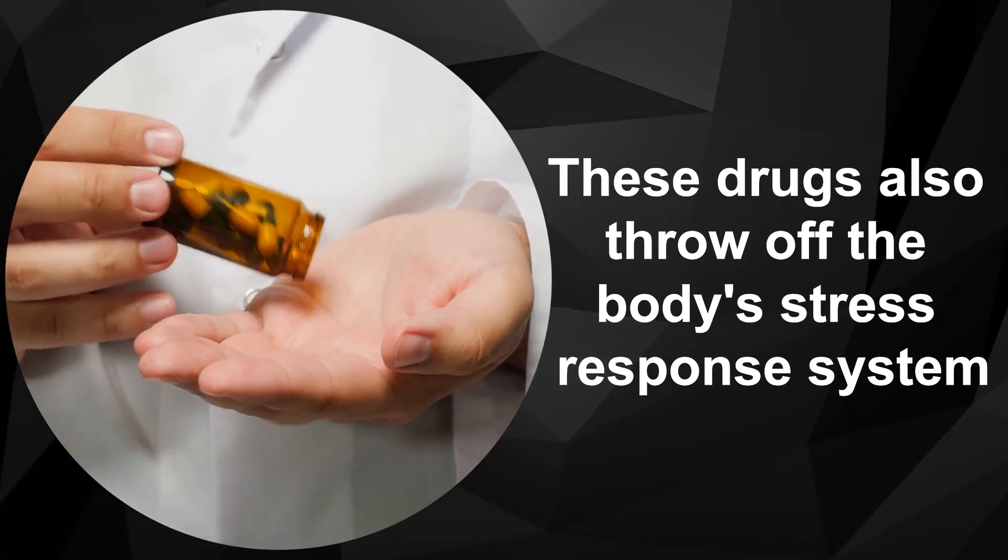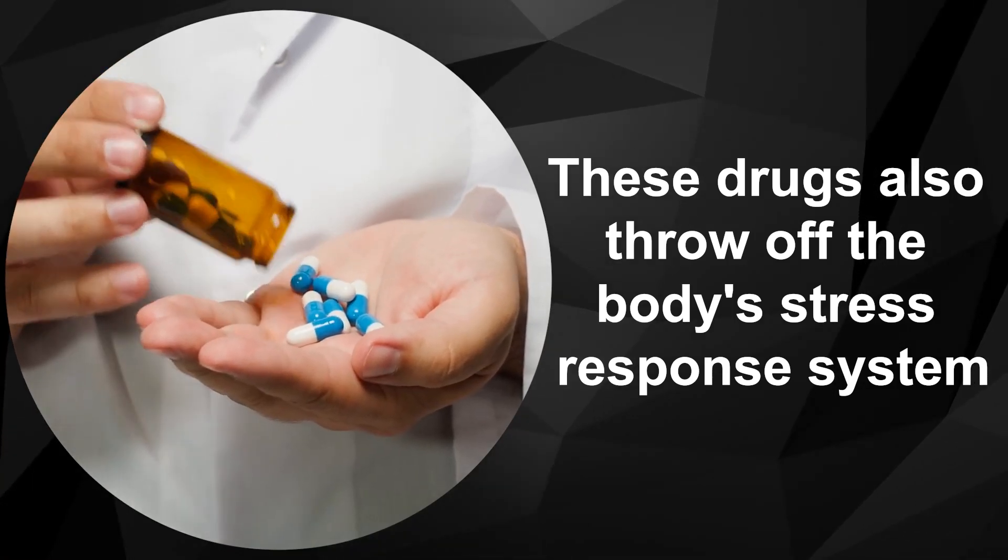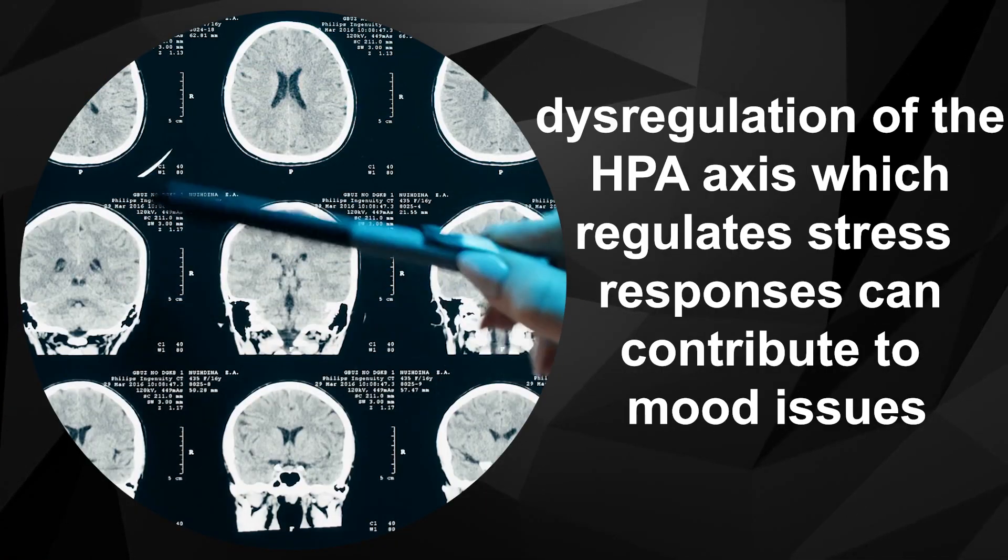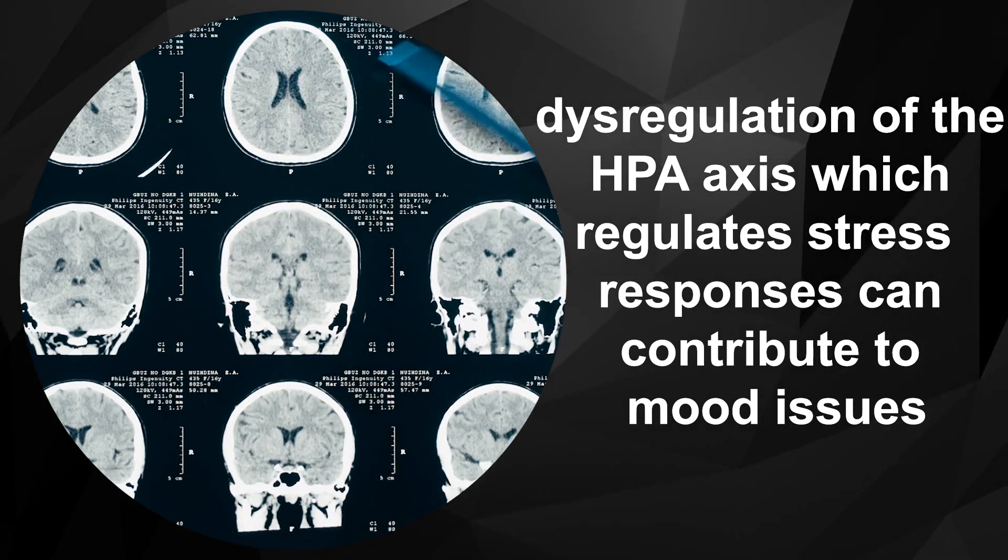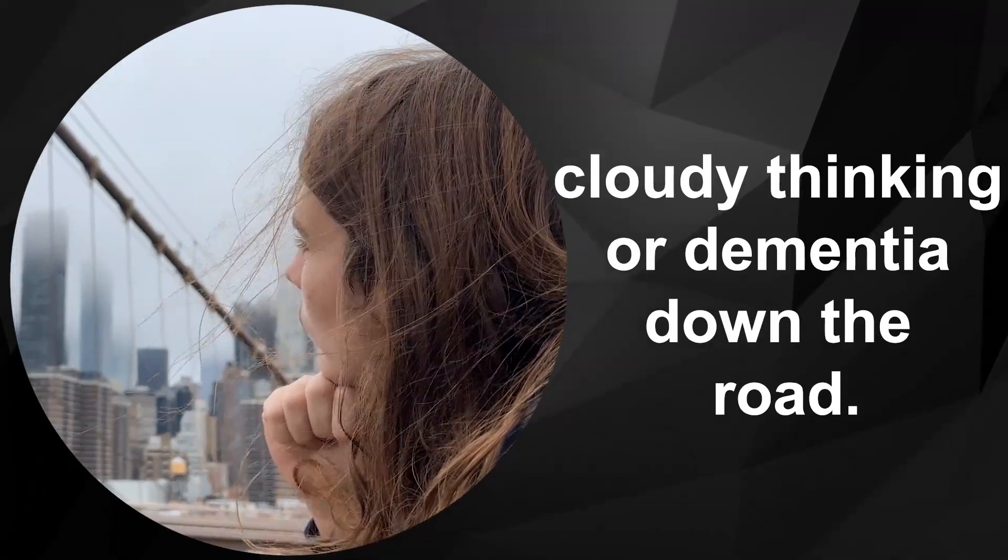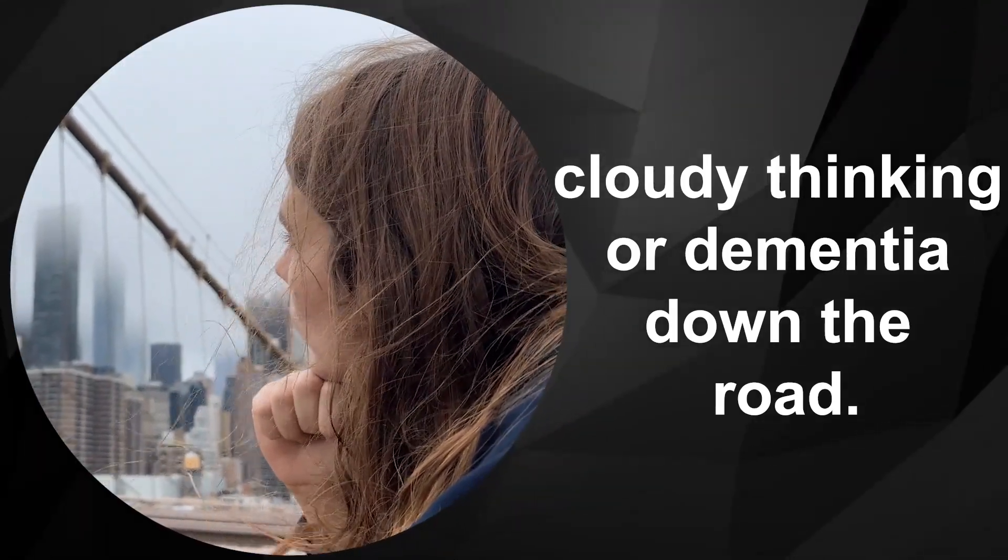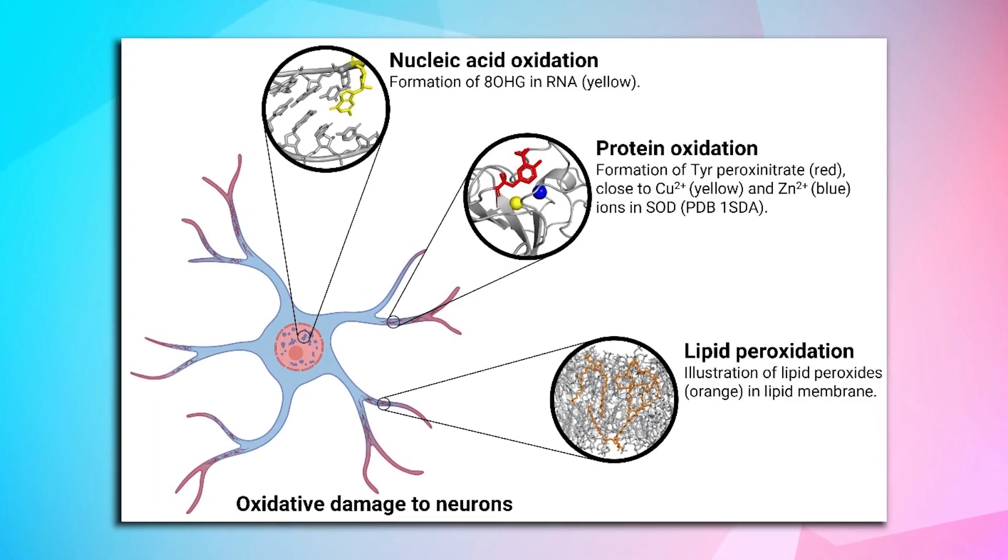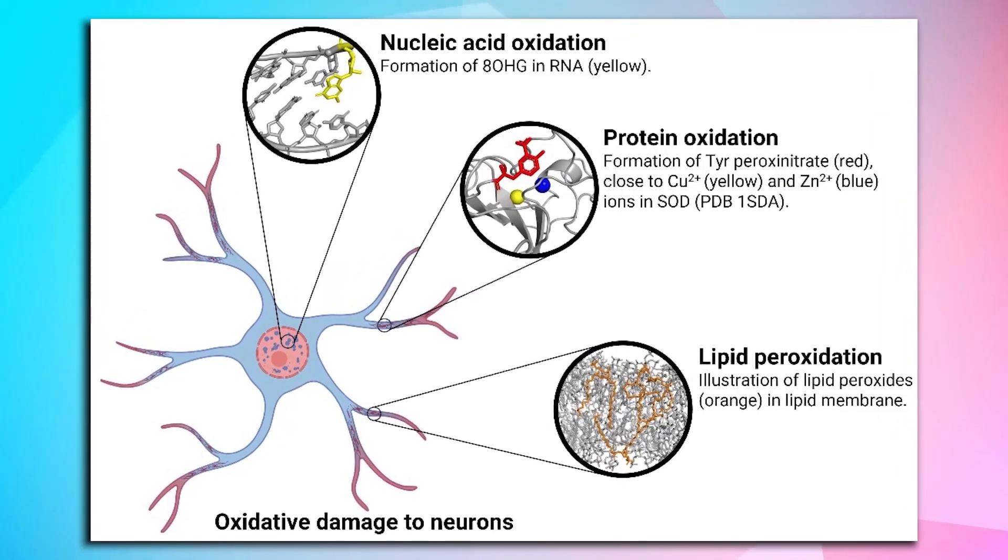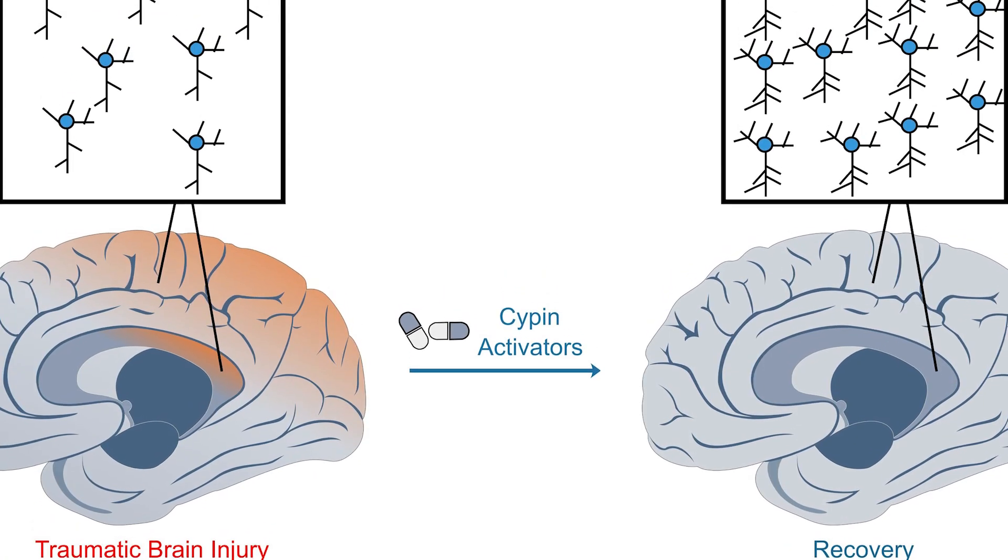These drugs also throw off the body's stress response system. Dysregulation of the HPA axis, which regulates stress responses, can contribute to mood issues, cloudy thinking, or dementia down the road. Additionally, if taken for too long, corticosteroids spur inflammation and oxidative stress in the brain, leading to neuronal damage.